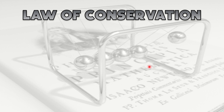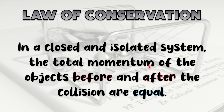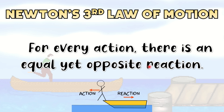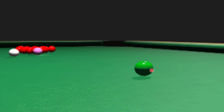Take note of the Law of Conservation of Momentum. It states that in a closed and isolated system, the total momentum of the objects before and after collision are equal. We also need to consider Newton's third law of motion, which says that for every action, there is an equal yet opposite reaction. It implies that when two objects interact, they exert equal forces on each other. For example, in the game of billiards, when the cue ball hits another ball and both are moving, the momentum is still conserved.